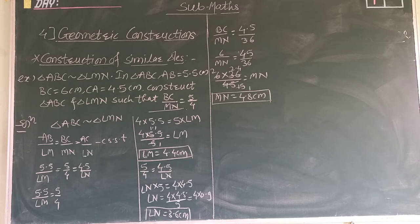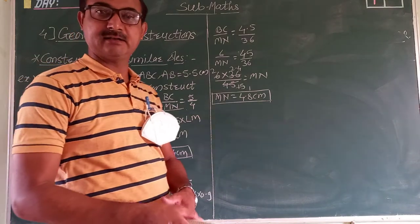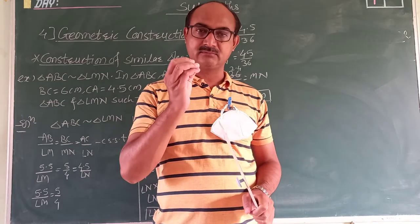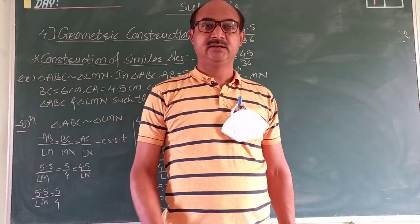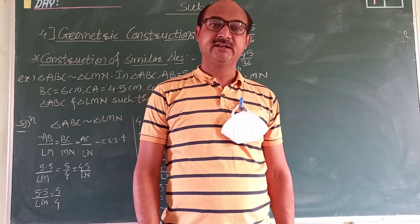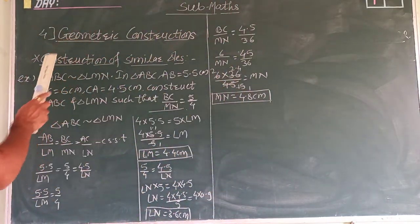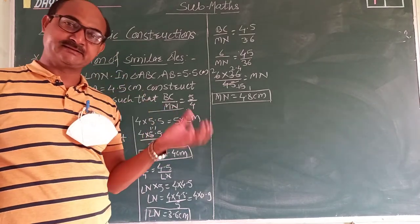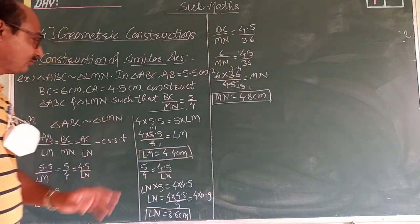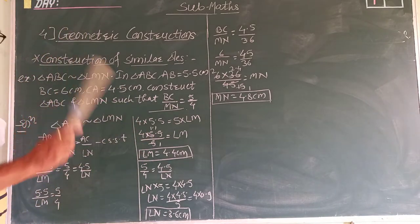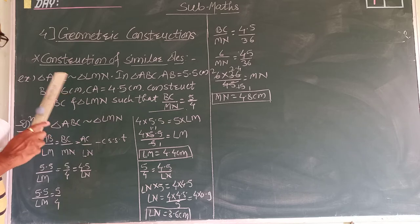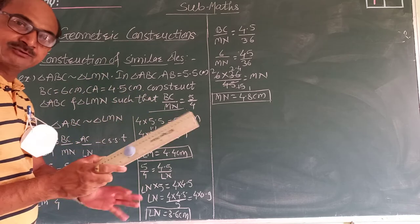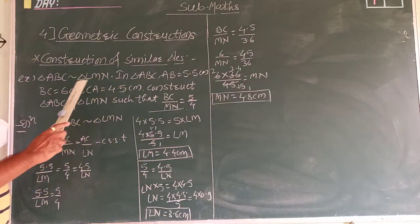Good morning students. Today we start a new lesson: geometry construction. The first construction is construction of similar triangles. You all know similar triangles — their corresponding sides are in proportion and corresponding angles are equal. There are two types of similar triangle construction. In the first type, the vertices of the two triangles are all different — for example triangles ABC and LML have no common vertex — so this type of construction is simple.